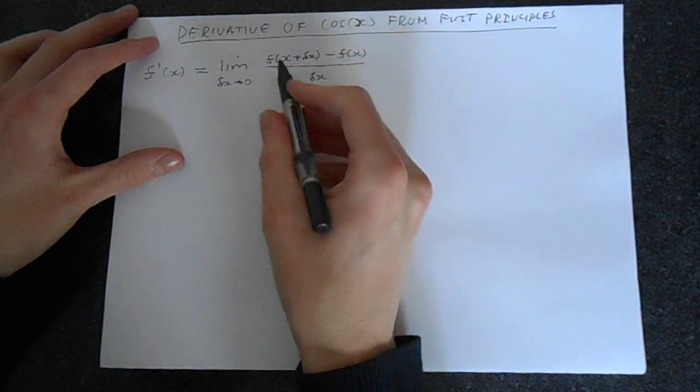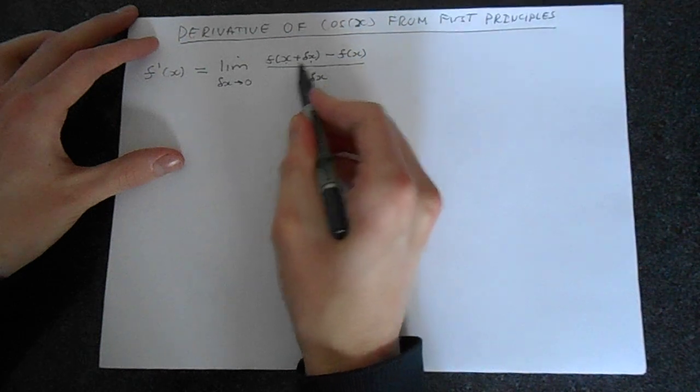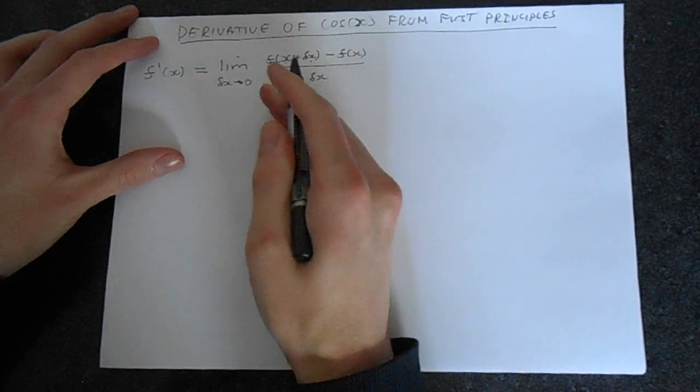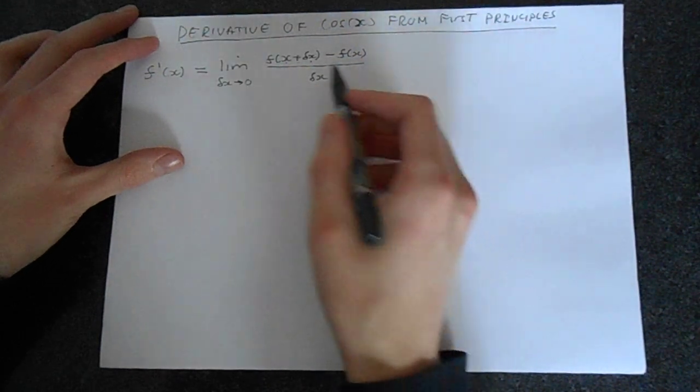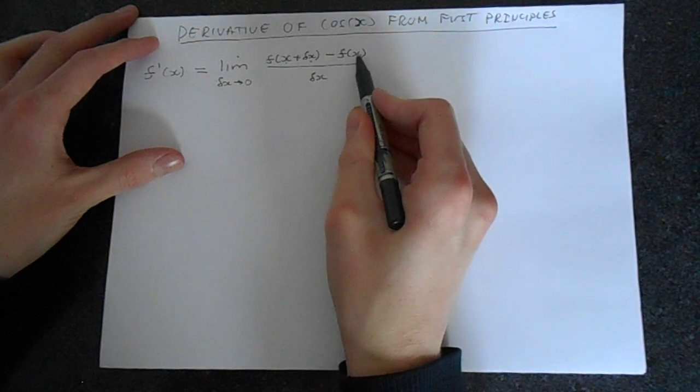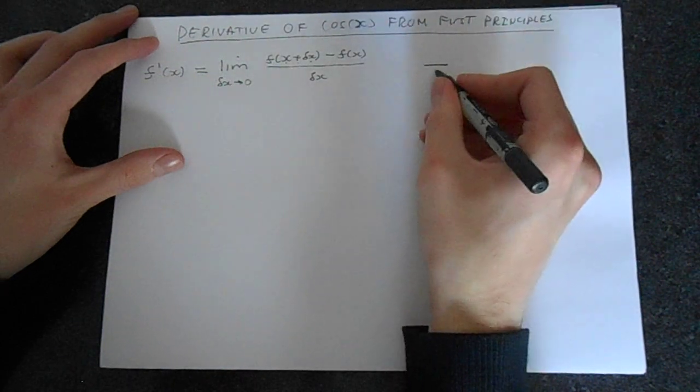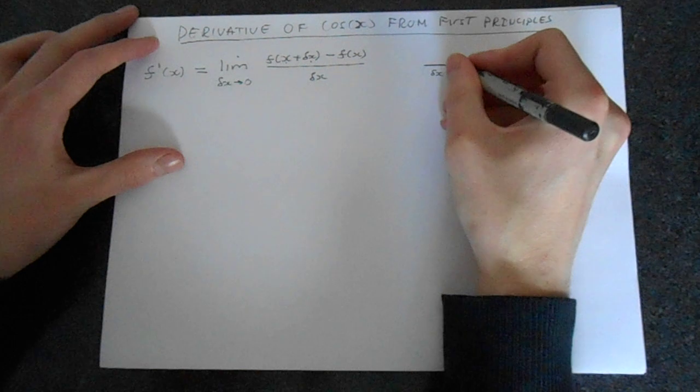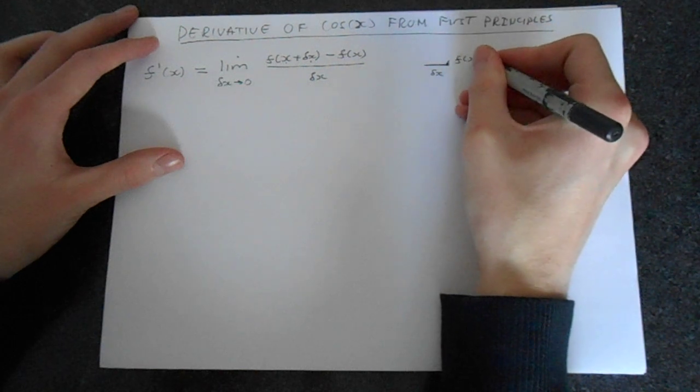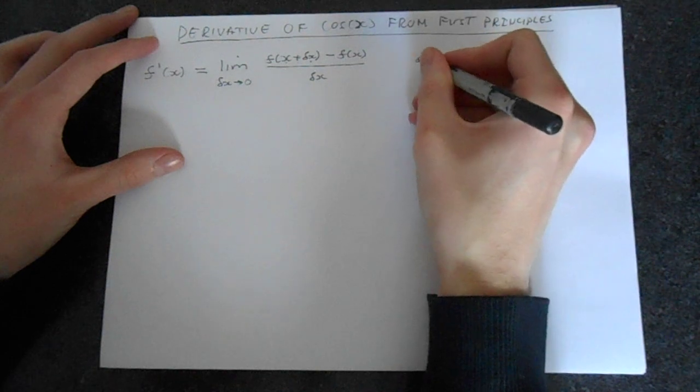Let's think about what this means. So this is the value of the function at x plus delta x - some point x shifted along by delta x. Subtract from that the value of the function at point x. So this is something like this. A distance here, delta x.